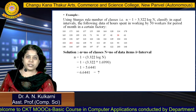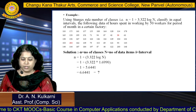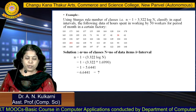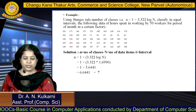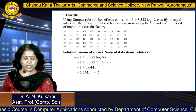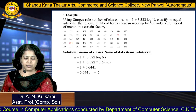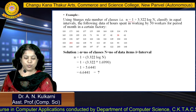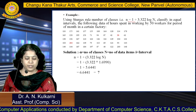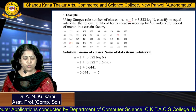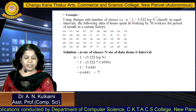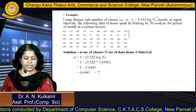Using Sturges' rule, we can find the number of classes for given data items. The formula is: n = 1 + 3.322 × log N, where capital N is the number of data items.